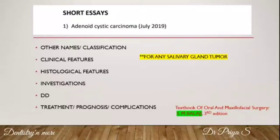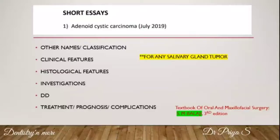Then list down all the clinical and histological features of that particular tumor — mention them in points, do not elaborate. Then list out all the investigations required to diagnose this particular condition, for example CT, MRI, sialography. After investigations, mention what is the differential diagnosis of this particular condition.